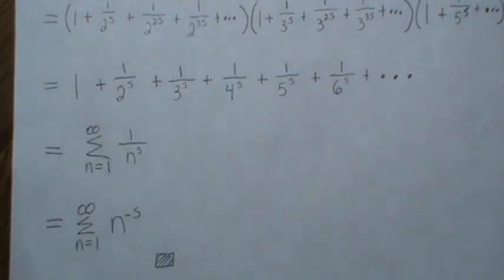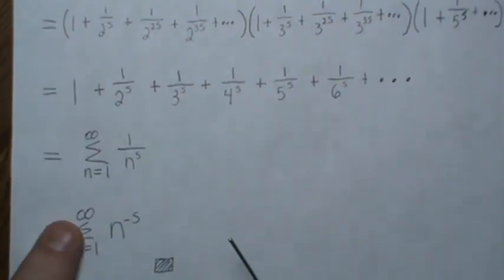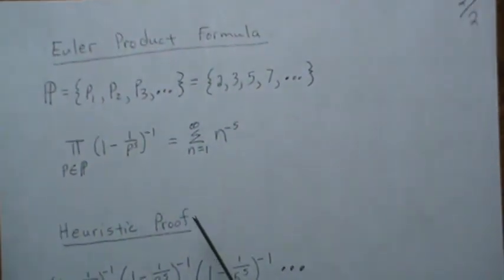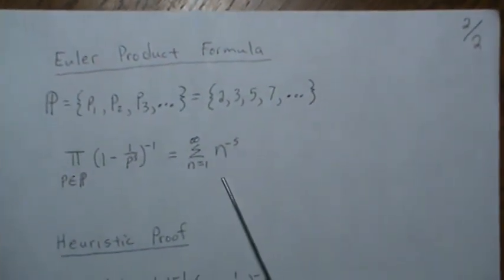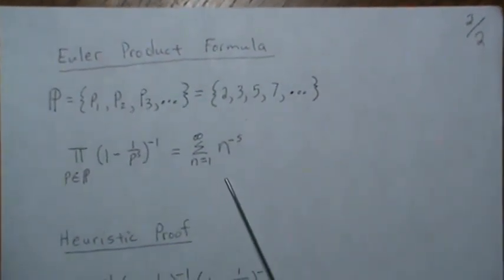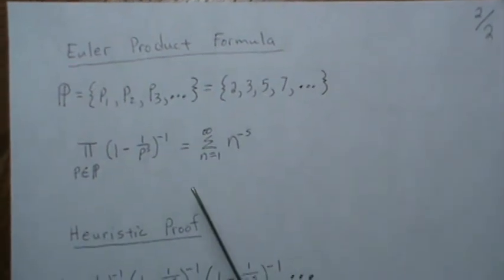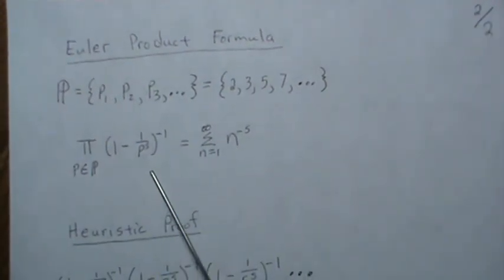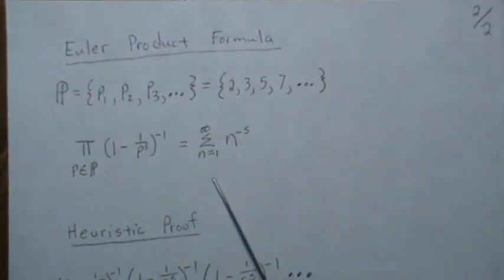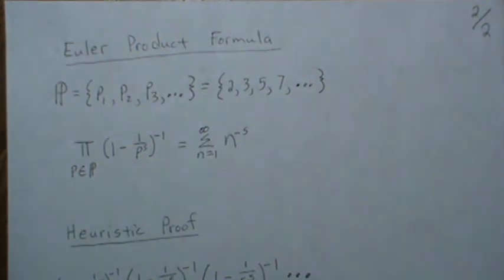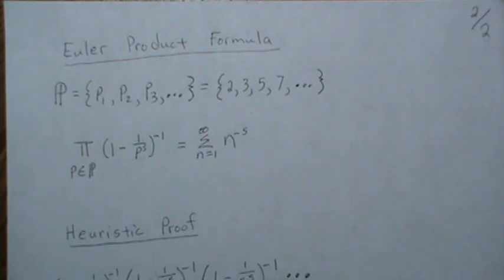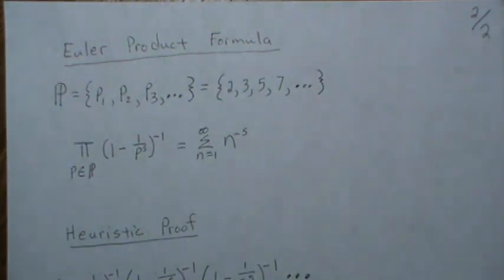It's a pretty neat and fascinating proof showing how the primes are associated with the Riemann zeta function. This is step one in how the primes are related, and since this topic is heavy in the news, I may do a few more videos on this. I hope you enjoyed it — if you did, please like and subscribe so you don't miss the next one. Thanks, bye.